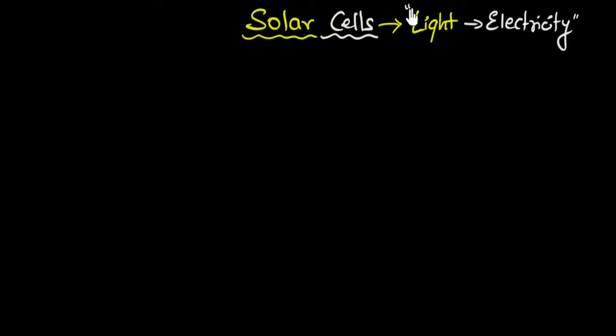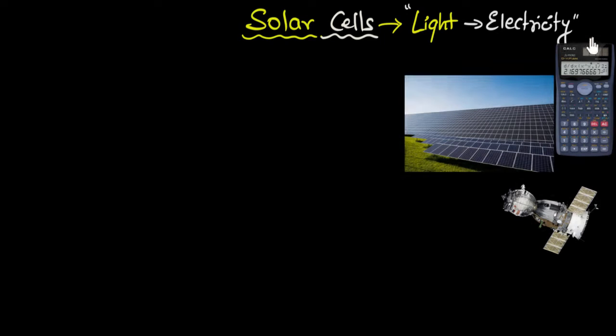It can be any light, but since usually we tend to use sunlight because it's available in abundance, we call them solar cells. You probably know where these are used. For example, they have a lot of applications. You probably use them in calculators.